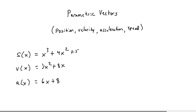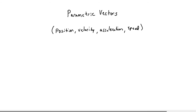Remember, speed is just going to be the absolute value of velocity. So speed will be equal to the absolute value of v(x). The good thing is that parametric vectors are very similar, because it's just now in parametric form — you have everything in terms of t, not x.